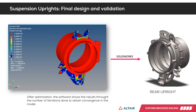Once the simulation has converged, the results window is displayed. The software shows results by means of element densities as a percentage, representing the amount of material needed in certain areas depending on the load cases implemented. These are shown through a color scale where red represents 100% material density, and blue regions represent areas with less material needed — excess that could be removed from the final design. The picture shown corresponds to iteration 37 out of 40 total iterations that the software needed to converge.